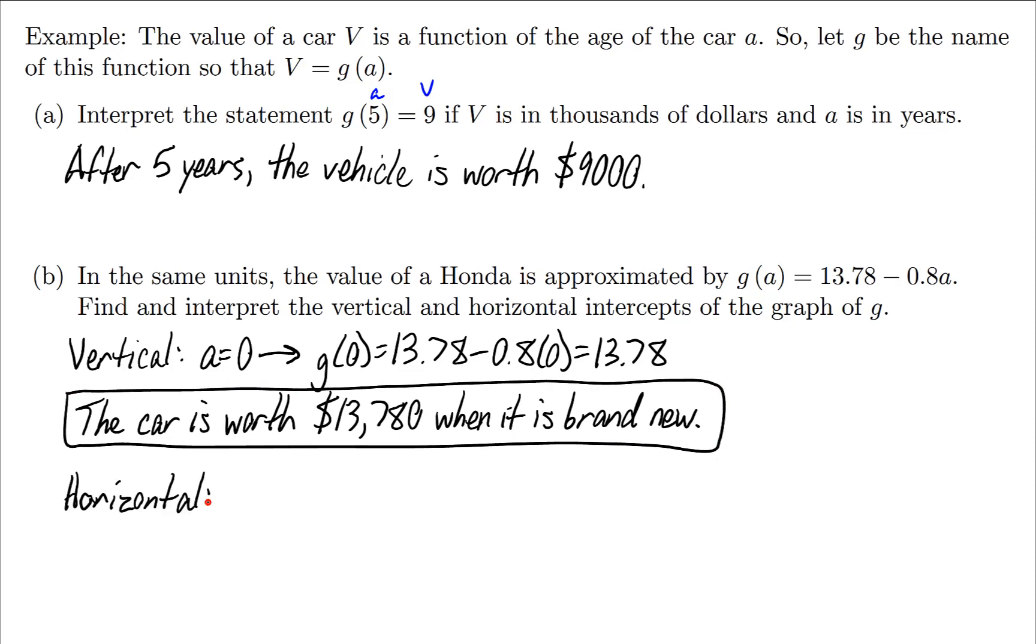Now for the horizontal intercept, we're going to set the value equal to zero, which is the same as setting the function equal to zero. We're going to say 13.78 - 0.8a = 0. Let's add the 0.8a to the other side to get 13.78 = 0.8a. I'll divide by 0.8 to get a = 13.78 / 0.8 = 17.225.